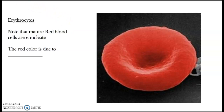The function of these cells is transporting oxygen from the lungs to the cells of the body. Through another mechanism, the red blood cells also transport some carbon dioxide from the cells back to the lungs. The circulating erythrocytes are enucleated — they don't have a nucleus — and their lifespan is around 120 days.